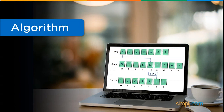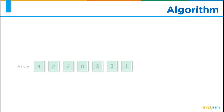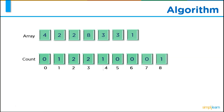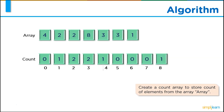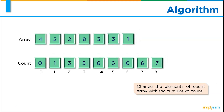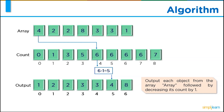Now let's discuss the counting sort algorithm. Given an array, first we will find the largest element to evaluate the range of the elements. Then we will create a count array to store the count of each element. Then we will update the count array's elements with a cumulative count. At last, we will output each element from the array followed by decreasing its count by 1.